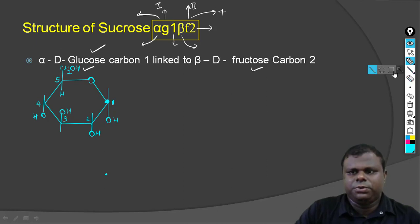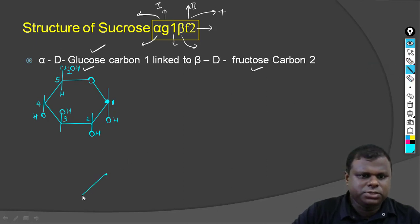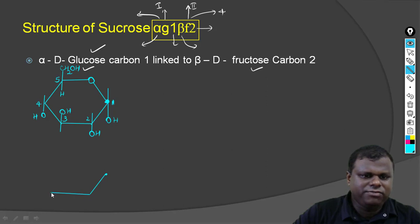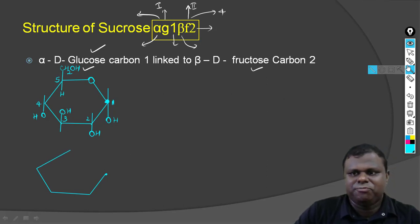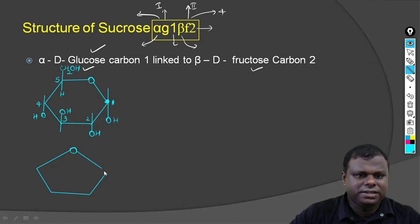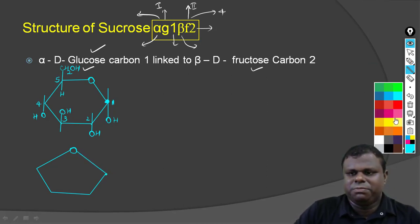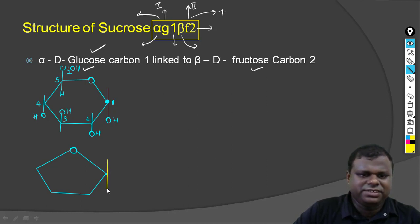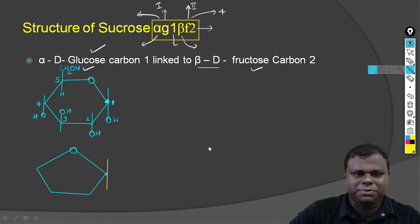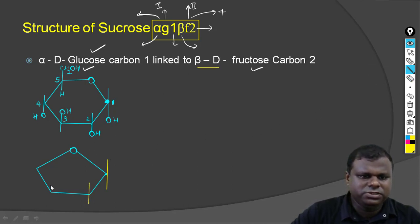Now I'm going to draw the fructose molecule — this time it's in the furanose form. So I'm going to write the furanose structure and complete the structure. Let me show the bond using different colors. It's in the beta form, so the OH is going to be up. Let me first put the bonds and put the important groups here — what we get here is OH and then CH2OH.